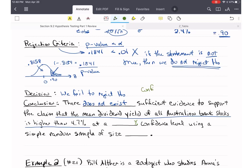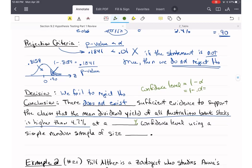So there does not exist sufficient evidence to support the claim that the mean dividend yield of all Australian bank stocks is higher than 4.7% at a confidence level. Remember that our confidence level is 1 minus alpha. So the confidence level and alpha have to add up to 100%. So alpha was 0.01, so our confidence level is going to be a 99% confidence level. So we always write that as a percentage. When we're talking to the public, we want to put it in terms they can understand. Well, that's the end of this video.